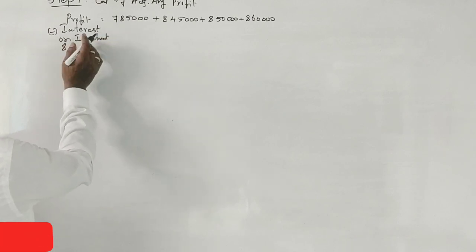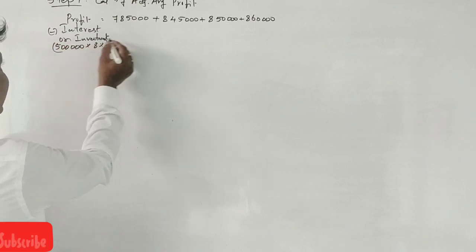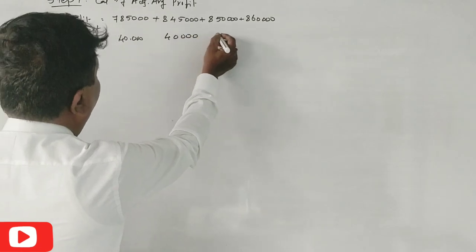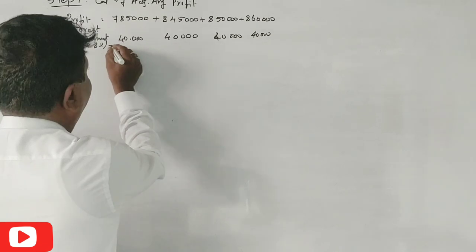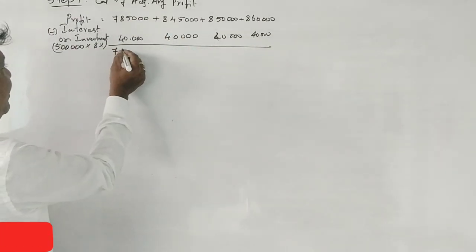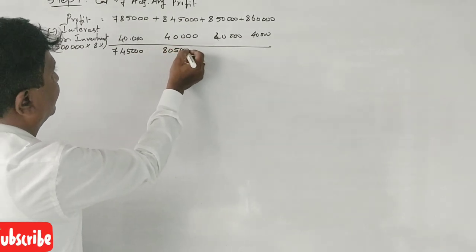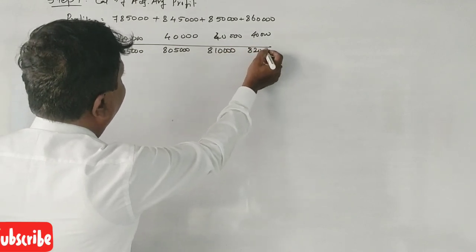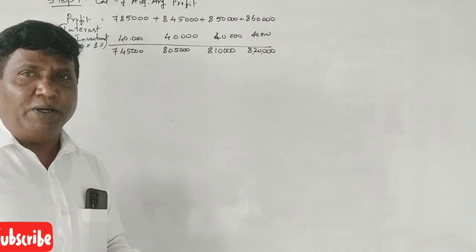Interest on investment - what is it? 5 lakhs investment, so 8% is 40,000. Every year, what is it? Minus 40,000. Correct? Minus 40,000. So the adjusted profits are: 7,45,000, 8,05,000, 8,10,000, 8,20,000. No more adjustments.